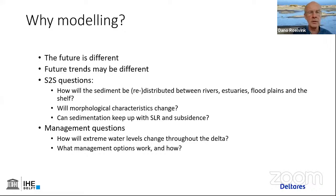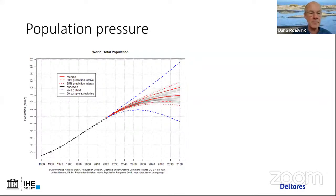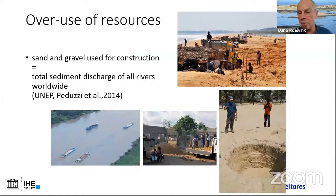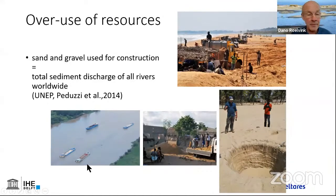First, population pressure: we can safely say that in 2100 we'll have more people than now, and we already have a very stressed global system because we're overusing resources. For example, sand and gravel used for construction is roughly equal to the total sediment discharge of all rivers worldwide. Here you see massive destruction of a sandbar in the Mekong Delta — sand barges going back and forth — and small-scale mining to build a house. But if you do that a million times, it adds up.